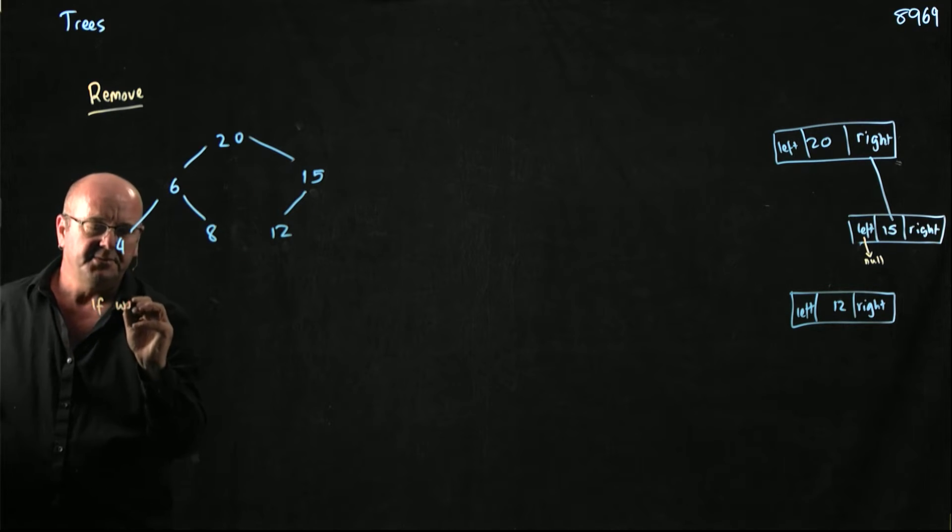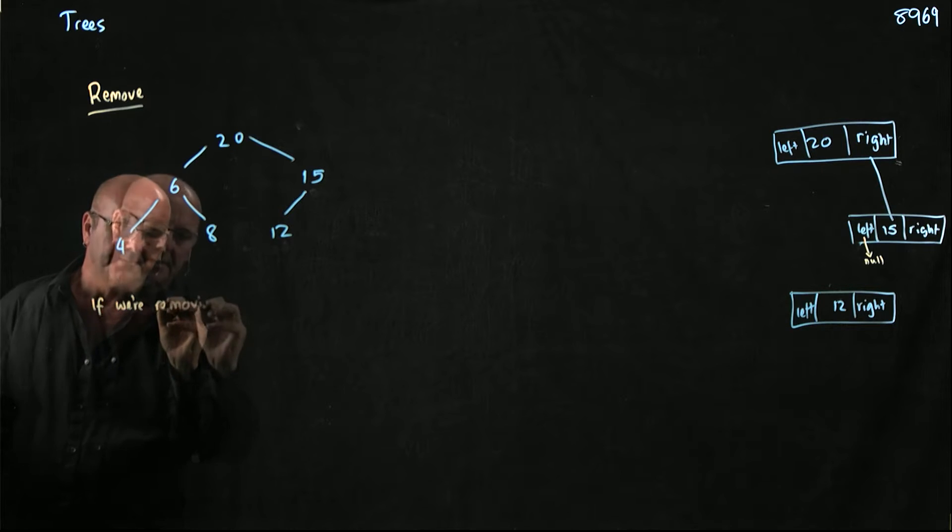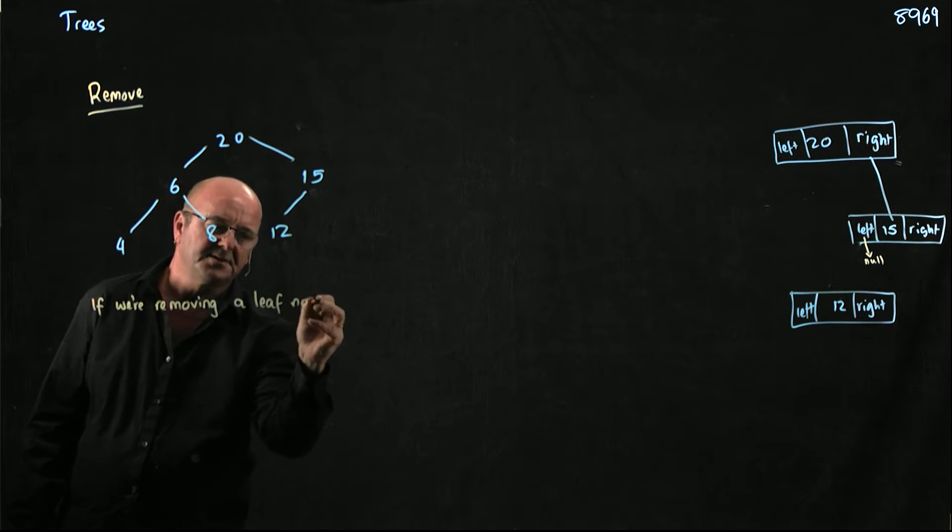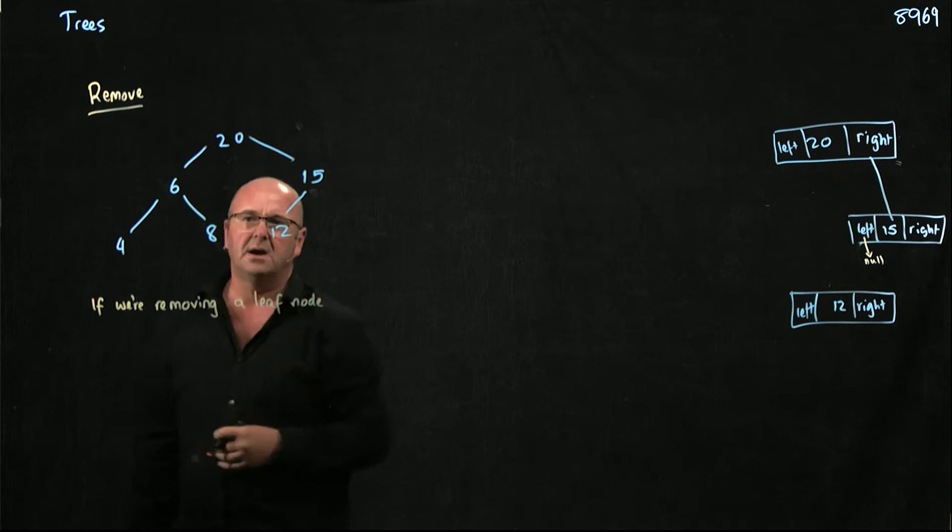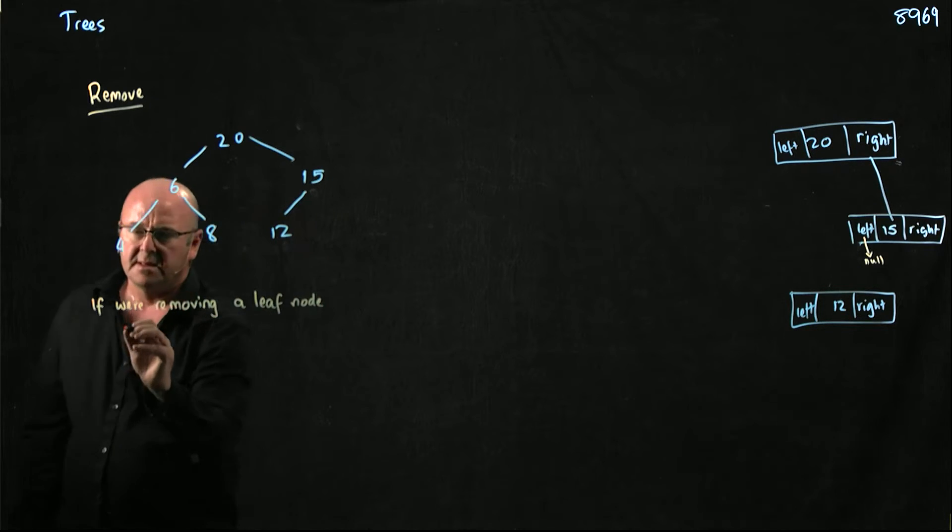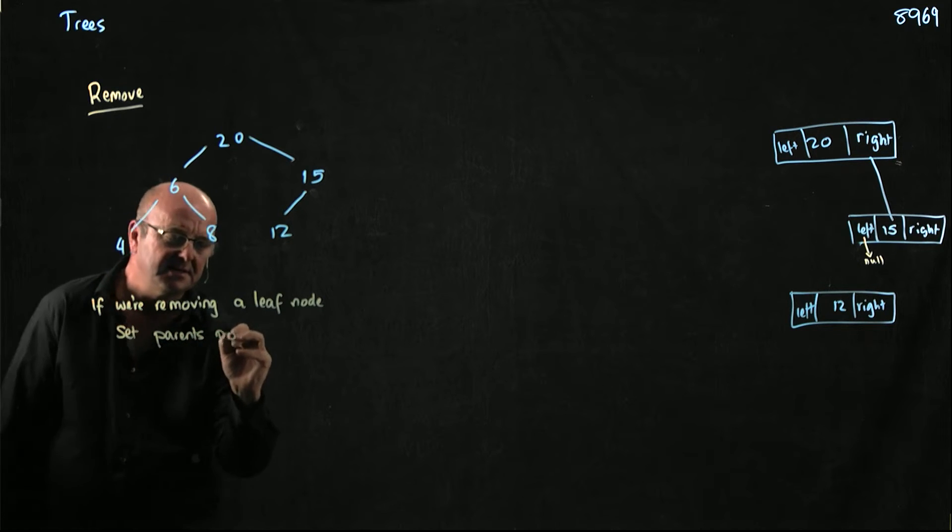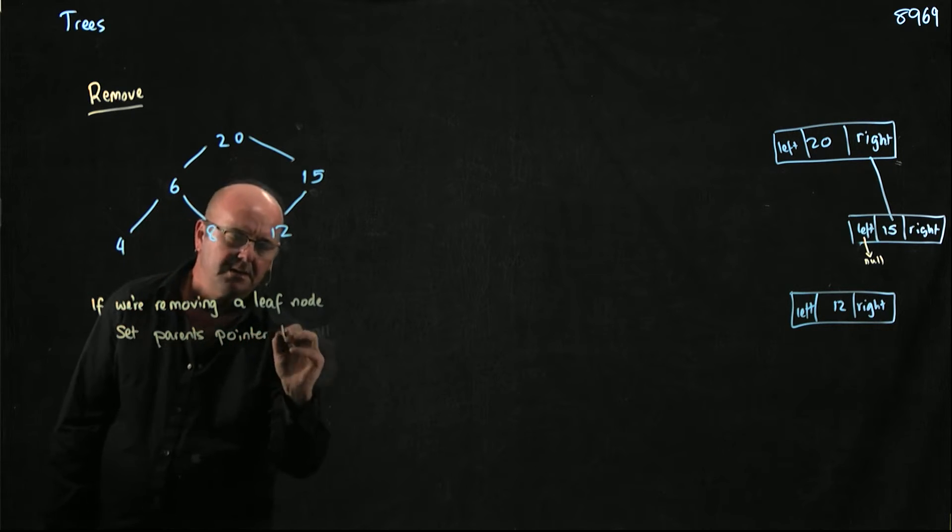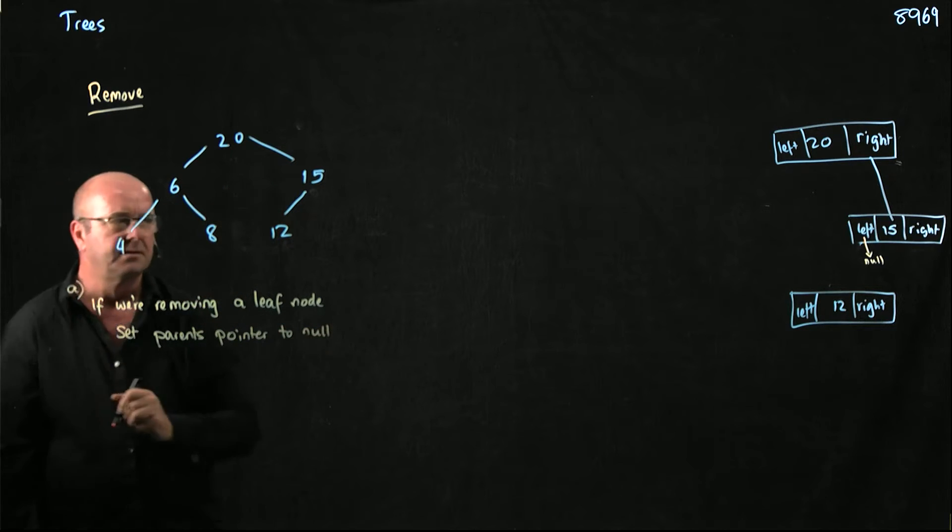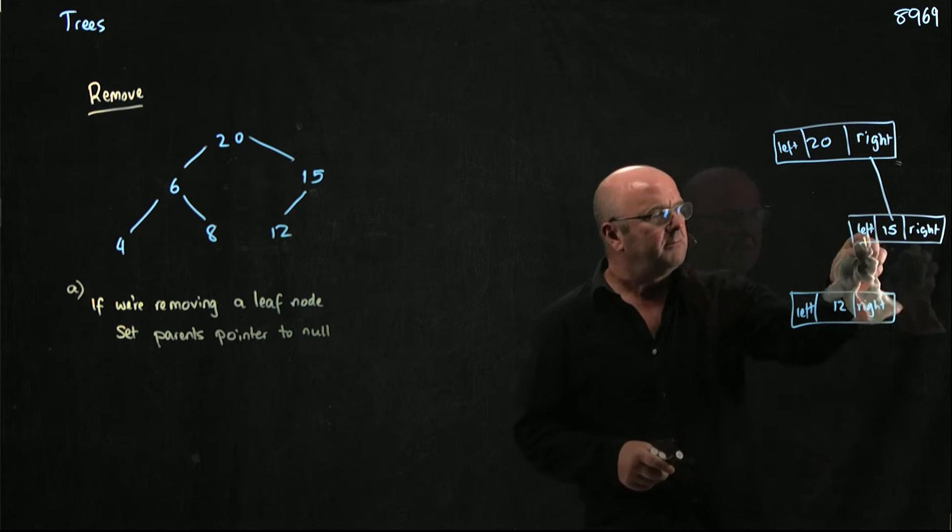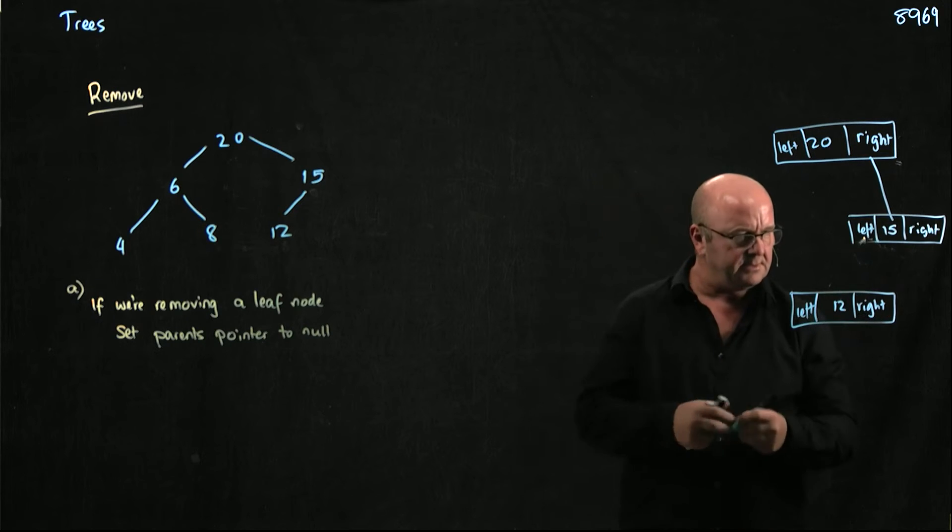So if we're removing a leaf node, which is what the 12 is because it's a node at the end of the tree, we just set the parent's pointer to null. Easy. Everybody happy about that? Come back little 12. We need you.